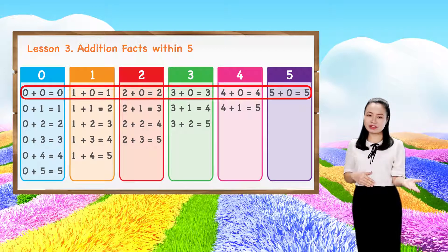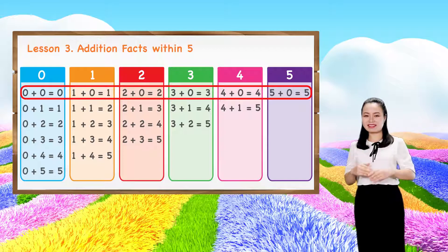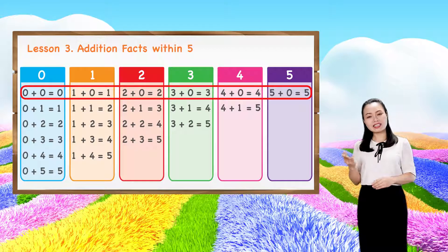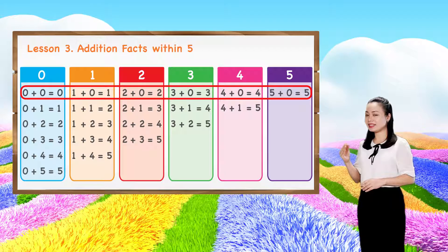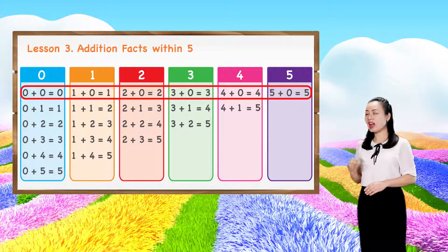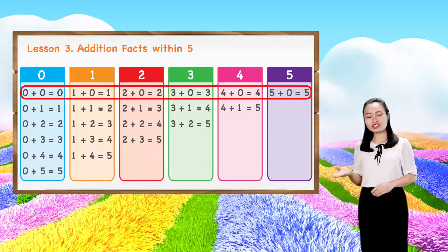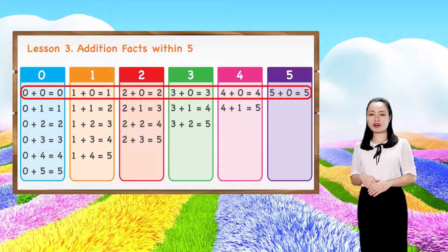You can see a number plus 0 equals itself, because 0 means nothing. So, a number plus nothing should equal itself. Addition facts are very important. I strongly advise you to learn addition facts by heart so that addition will be so much easier for you later on.